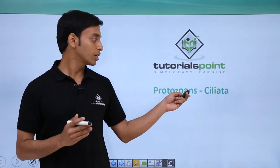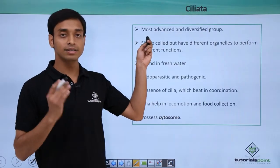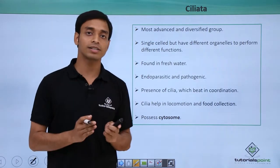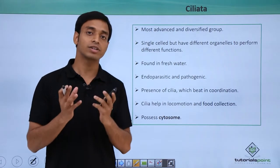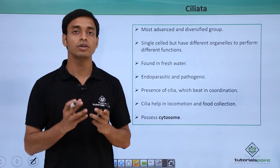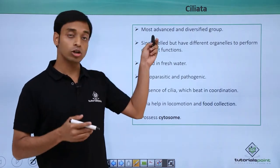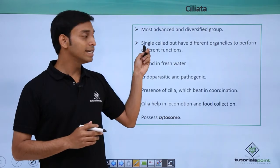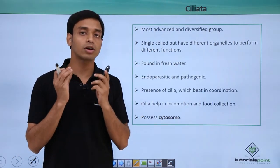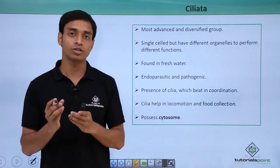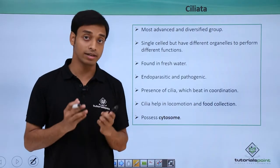Now let us look into what this Ciliata group of organisms have. Ciliata are considered one of the most advanced and most diversified groups of organisms. They are quite diverse and are mostly single-celled, but they have different organelles which are specific for different functions.